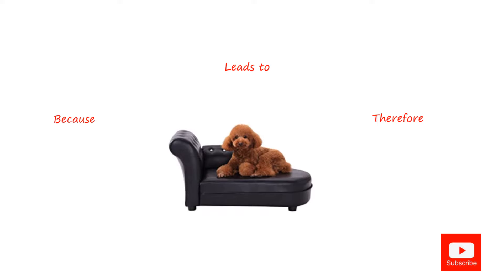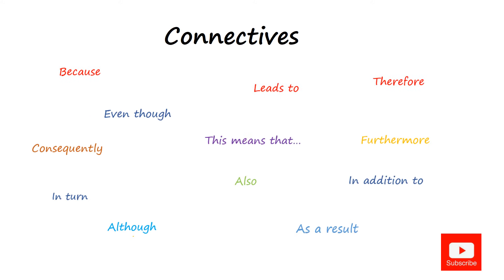But let's look at some more connectives. Here are some examples of connectives — words that can help you link to the impact, the effect, and the actual consequence. So we have: because, leads to, therefore, even though, this means that, furthermore, consequently, in turn, although, also, in addition to, and as a result.